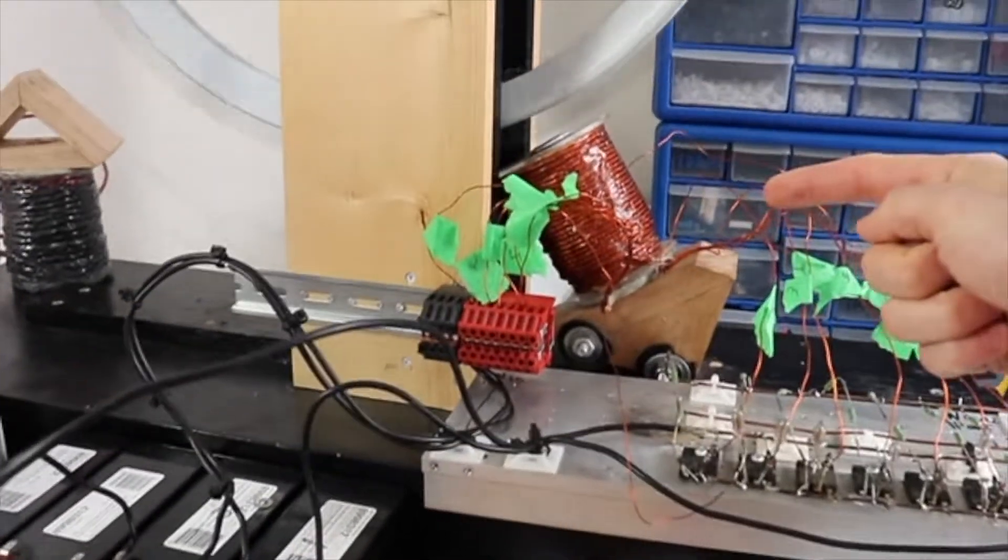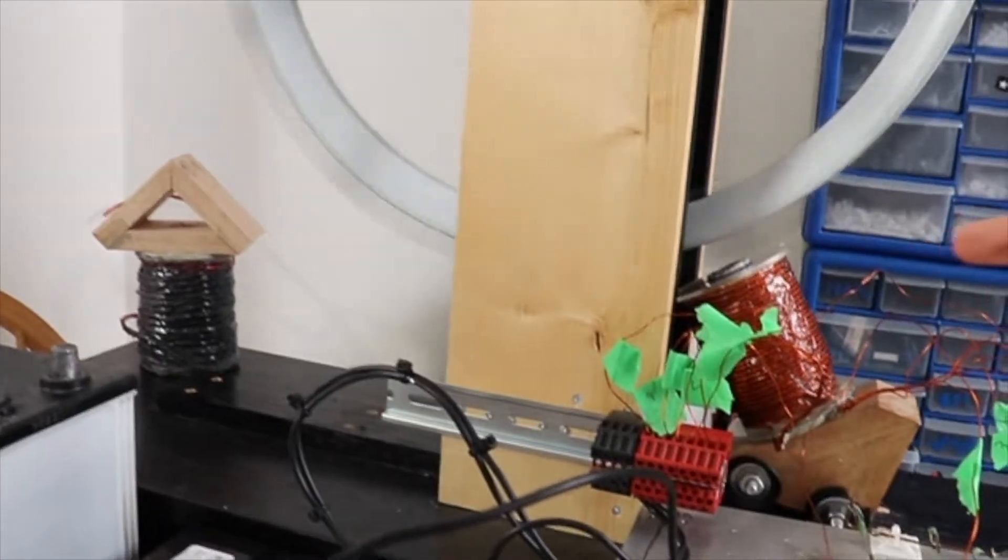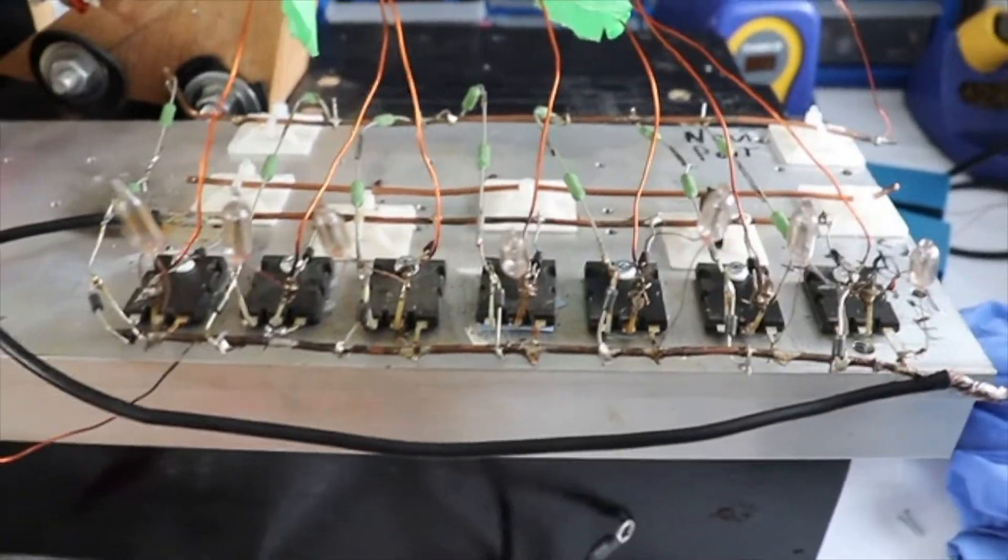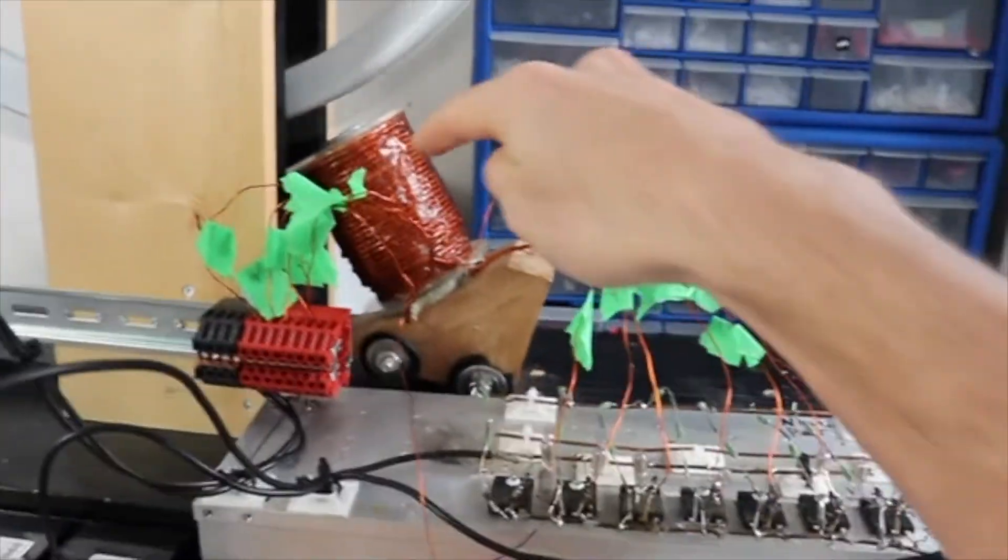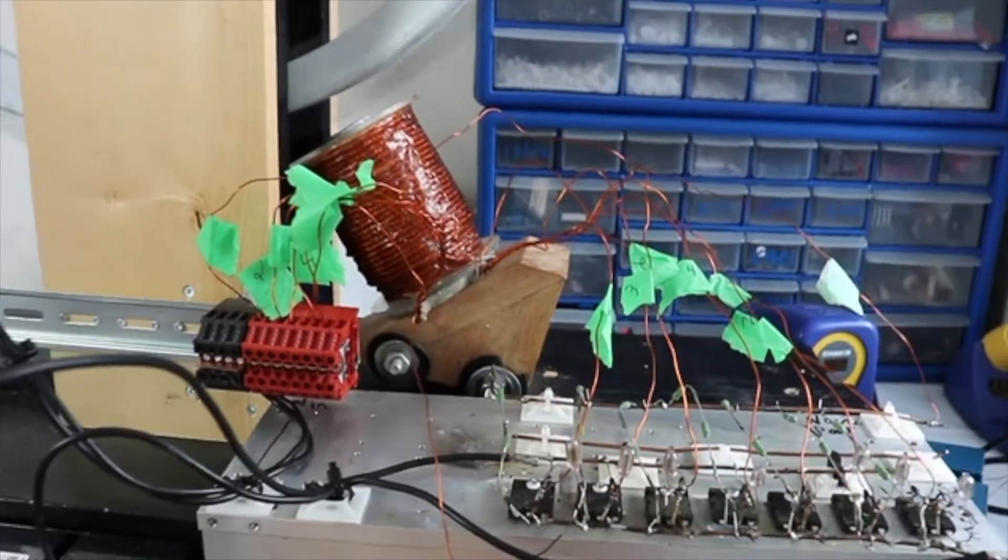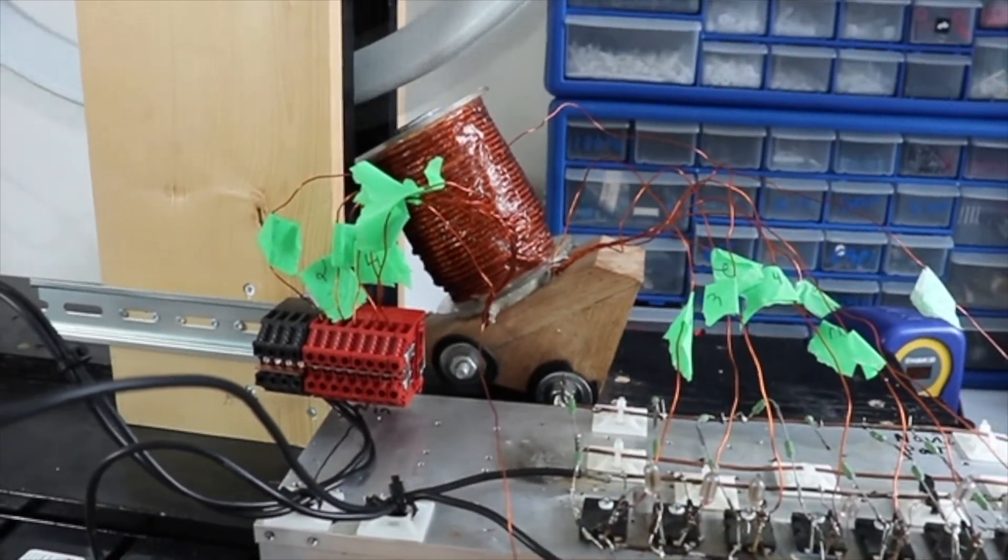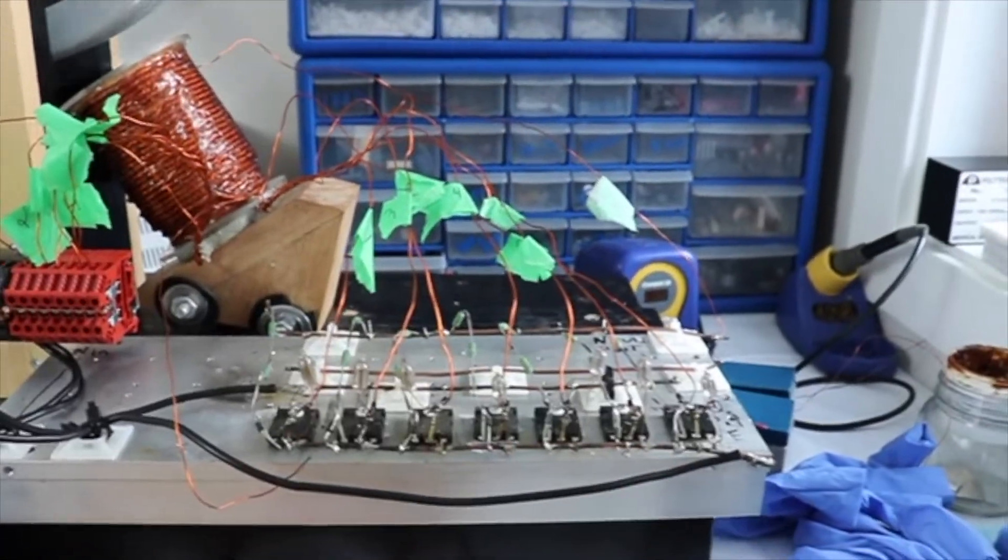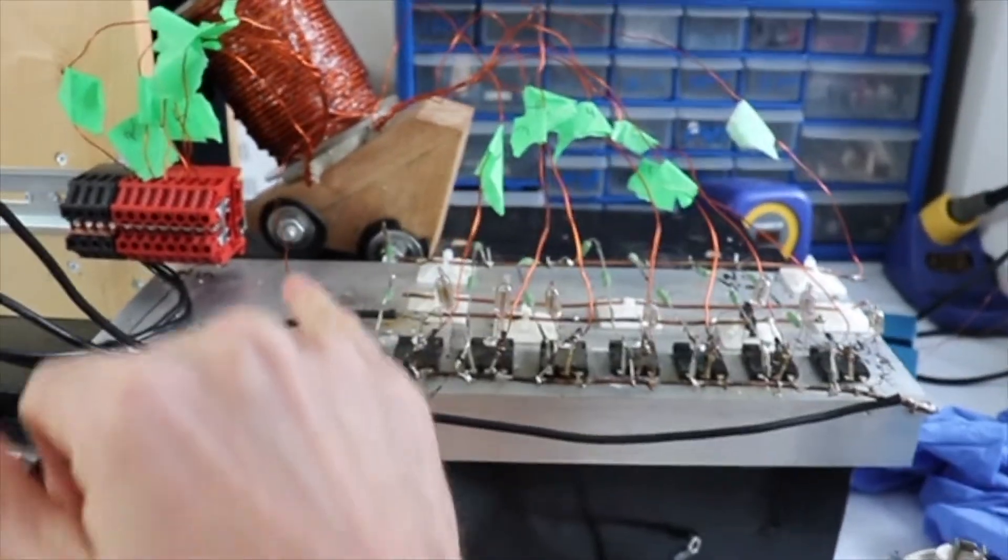This coil here is what is doing the powering of the wheel and actually vice versa. These transistors here, there's seven of them, and that's because there's seven power windings. So seven windings of the eight windings that are in that octofilar wound coil are the power windings going to these transistors, and the eighth one is this trigger winding.